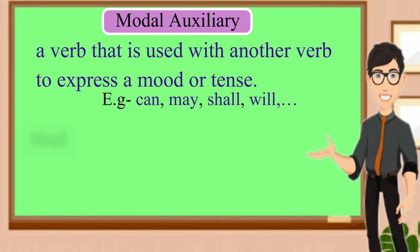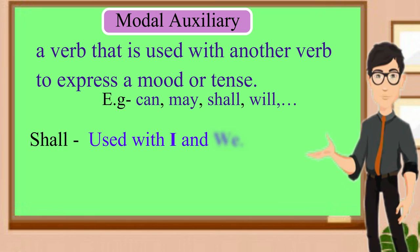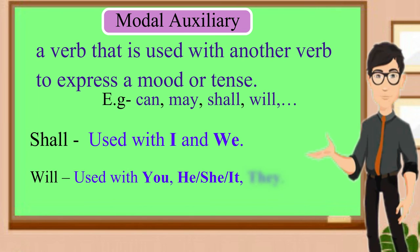Now the first rule: 'shall' is used with 'I' and 'we' — for example, 'We shall do it' and 'I shall do it.' And 'will' is used with 'you,' 'he,' 'she,' 'it,' or 'they' — for example, 'They will be going,' 'They will do it,' 'He will do it,' 'You will speak,' 'You will ride,' etc.